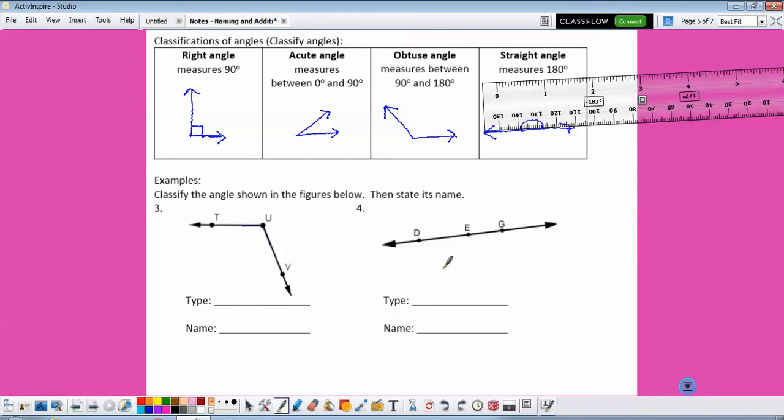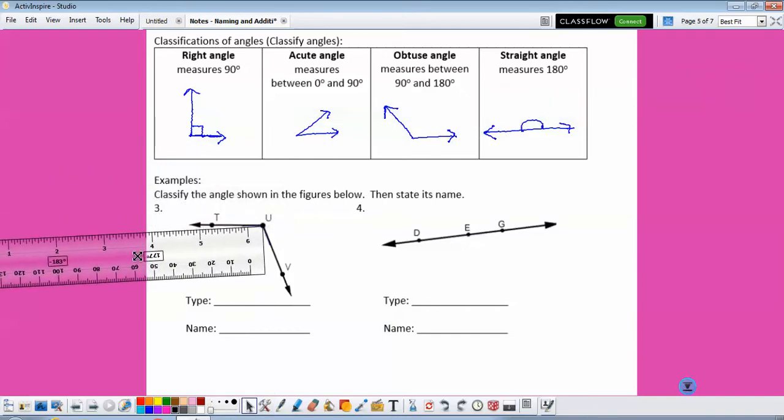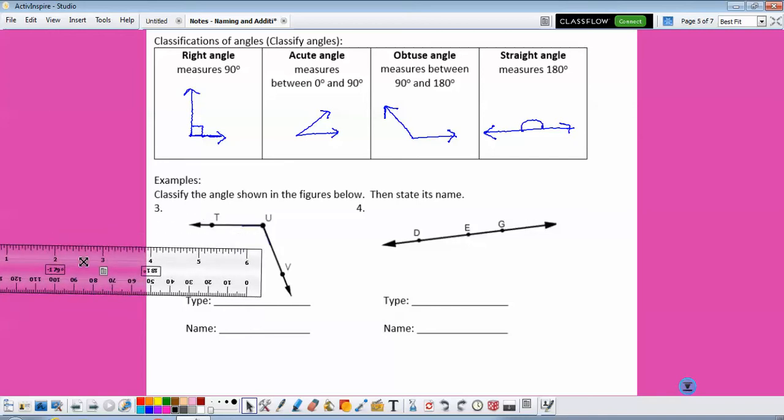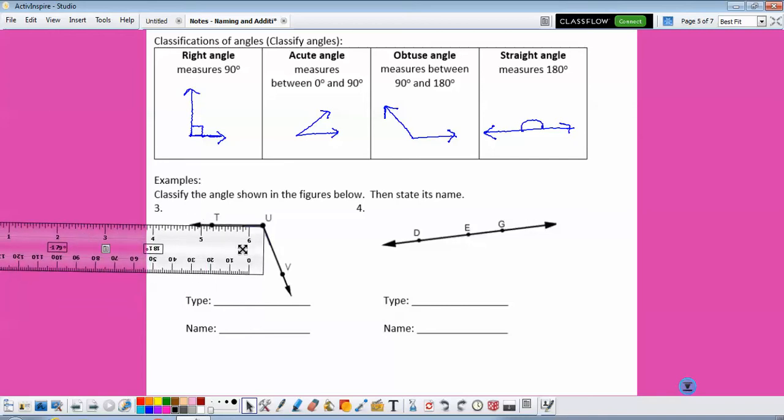All right, so let's classify the angles shown below, and then name it. So if I use my ruler to check, I'm going to line my ruler up with one side. That's bigger than my corner, so I know that it is an obtuse angle, and sometimes we get lazy and don't want to write angles, so we just draw the angle symbol.